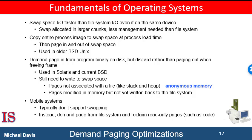One option for the system to gain better paging throughput is by copying an entire file image into the swap space at process startup and then performing demand paging from that swap space instead of the file system. There is more overhead to this approach due to the copying of the file image at program startup. A second option, practiced by several operating systems including Linux and Windows, is to demand page from the file system initially, but to write the pages to swap space as they are replaced, working similar to the caching techniques discussed earlier. This approach ensures that only needed pages are read from the file system, but that all subsequent paging is done from swap space.